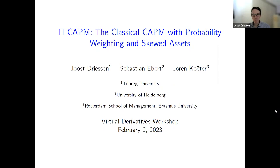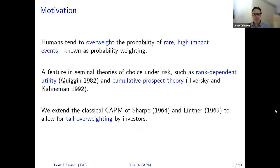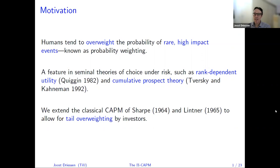The starting point of the paper is the concept of probability weighting, which many of you are familiar with. This comes from psychology and decision science, and the notion is that human beings tend to overweight the probability of rare high-impact events. This has been shown in lots of experimental work, and since then it has been incorporated in decision science and also in economics and finance.